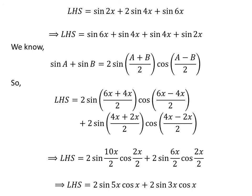Canceling out the common factor in the numerator and denominator of each fraction gives us the left hand side equal to 2 times sine of 5x times cosine of x, plus 2 times sine of 3x times cosine of x.